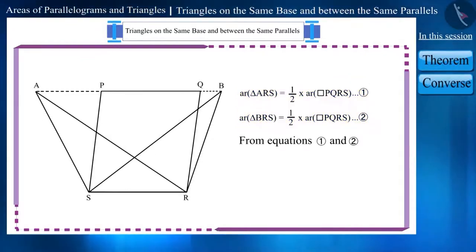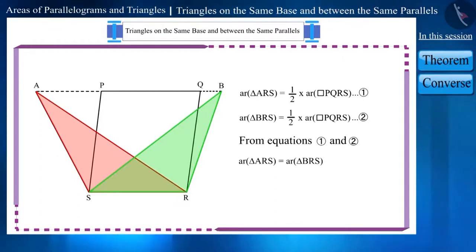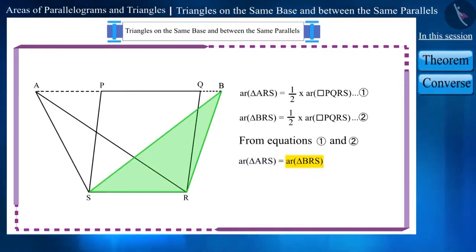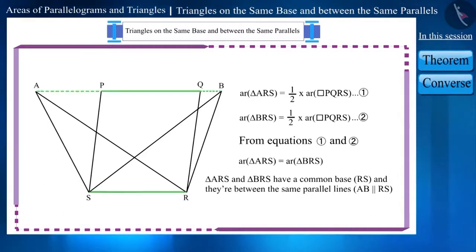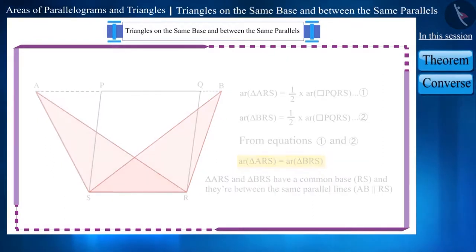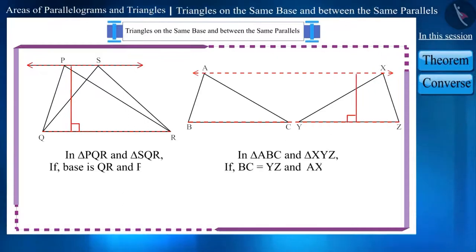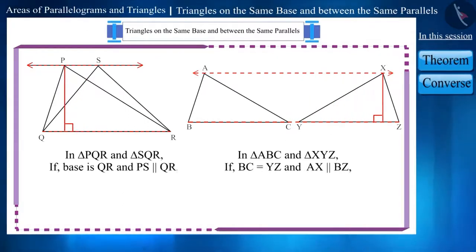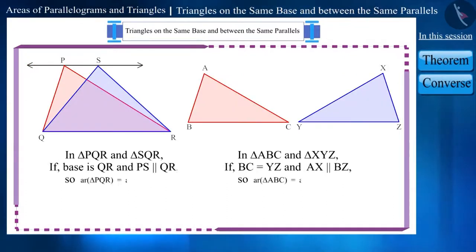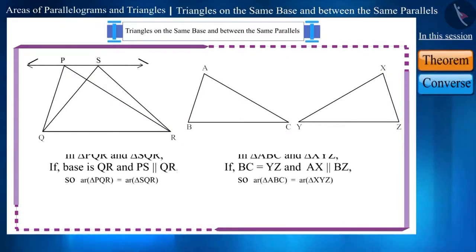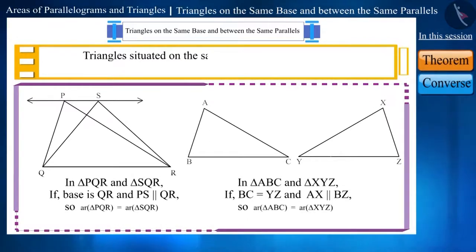If we look at these two situations, then we can say that the area of these two triangles are equal. That is, the area of triangle ARS and triangle BRS, which are situated on the same base RS and between the same parallel lines AB and RS, is equal. You can check using other triangles situated on the same base and between the same parallel lines — they are equal in area.